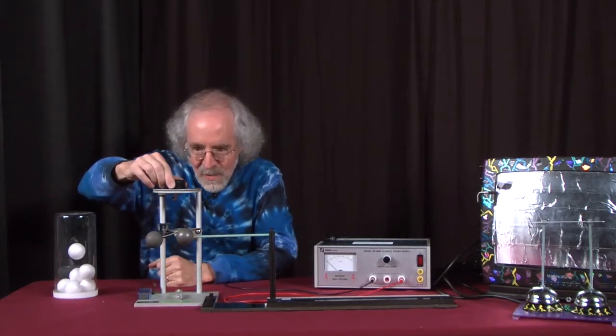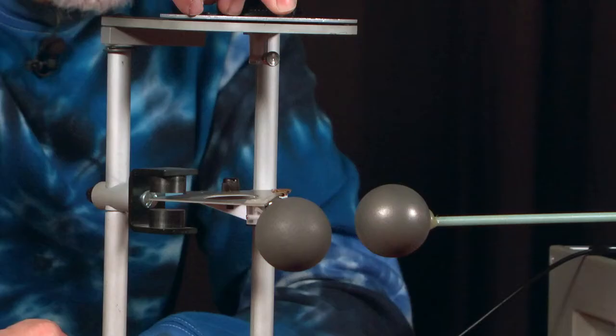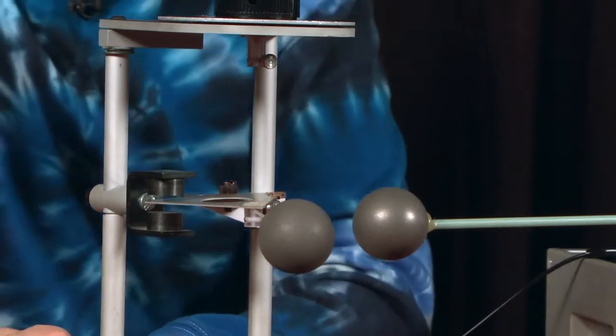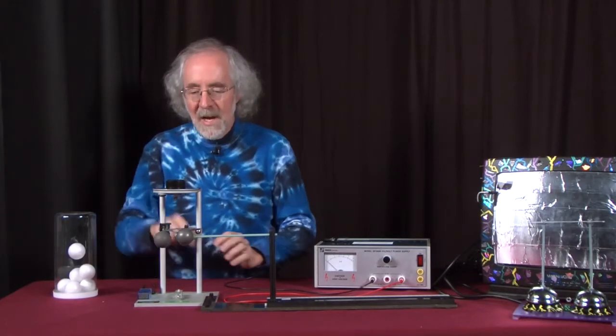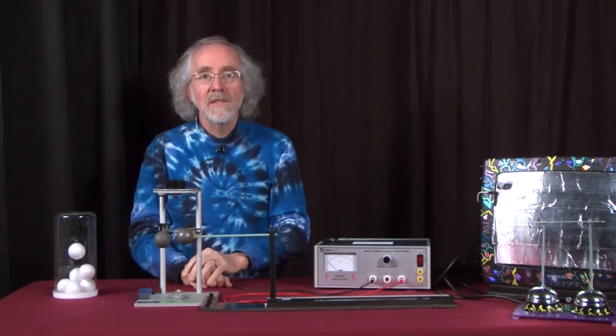I can turn this torsion balance and bring it back so that the sphere on the left is exactly where it started. And when I do that, the dial here gives me a measure of how much force I need to apply to bring it back to where it started, and so therefore it gives me a measure of the force between these two spheres.